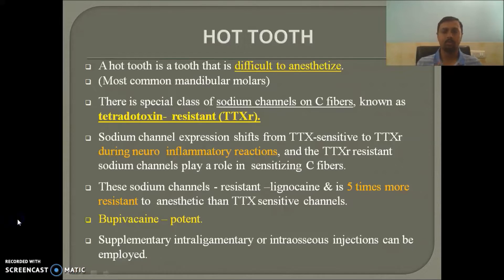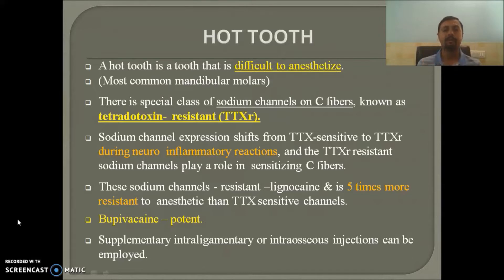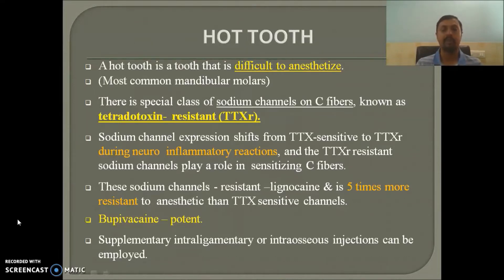Often we have seen that we give the inferior alveolar nerve block to the patient — the patient has soft tissue numbness — but when we go for the access opening, the patient will feel acute pain. That is a hot tooth. So why does such a thing occur?